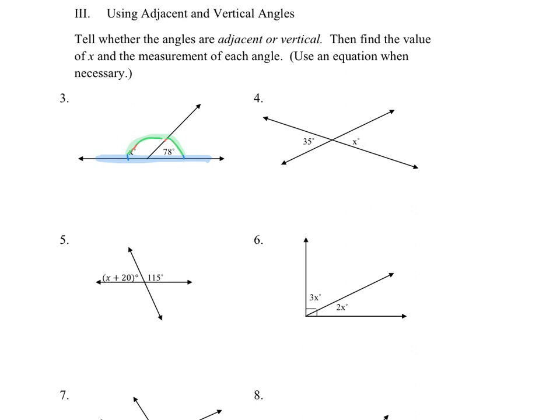So I can create an equation based on that. If I took angle X, plus angle 78, and I put the two of them together, they're going to create a straight line, which is 180 degrees. So I can set up an equation and solve for my variable. I subtract 78 from both sides, I'll get X equals 102.